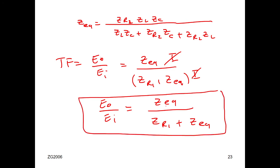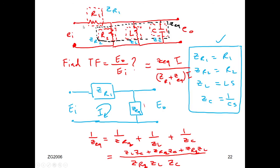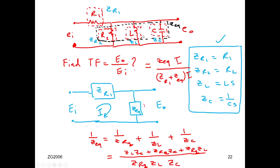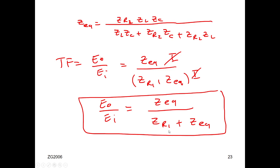You'll get a nice transfer function similar to what we got before. This is how we use complex impedance — it's very useful with multi-loop circuits. You can solve it in one page instead of many pages, compared to the multi-loop equations of motion and substitution method. Complex impedance is sometimes very useful, and this is the last new and important topic in Chapter 6. Thank you very much.